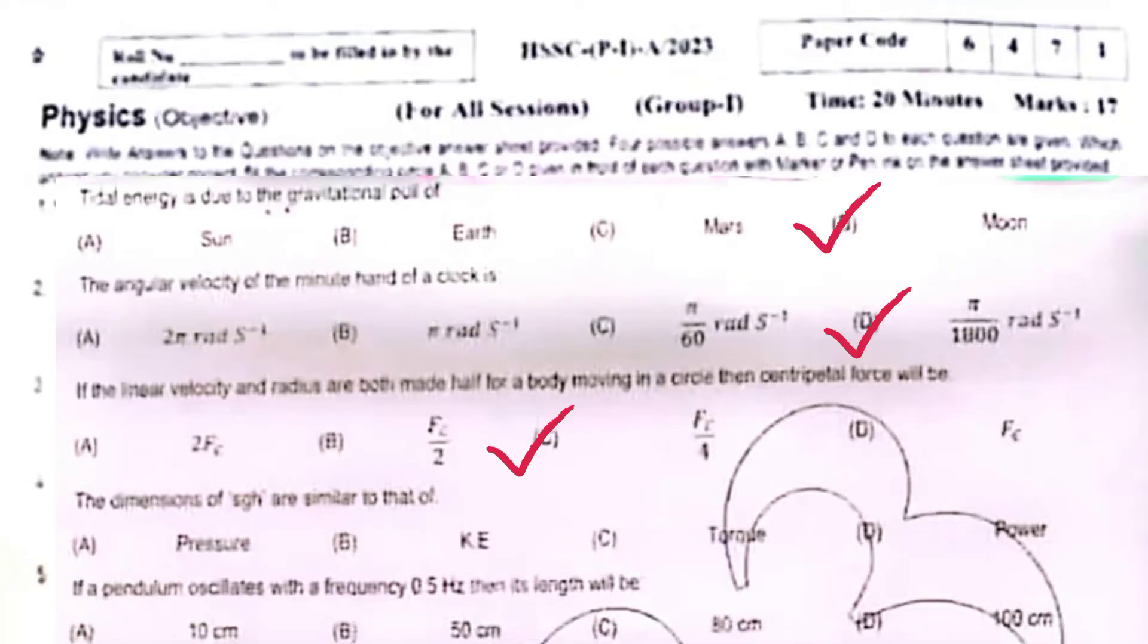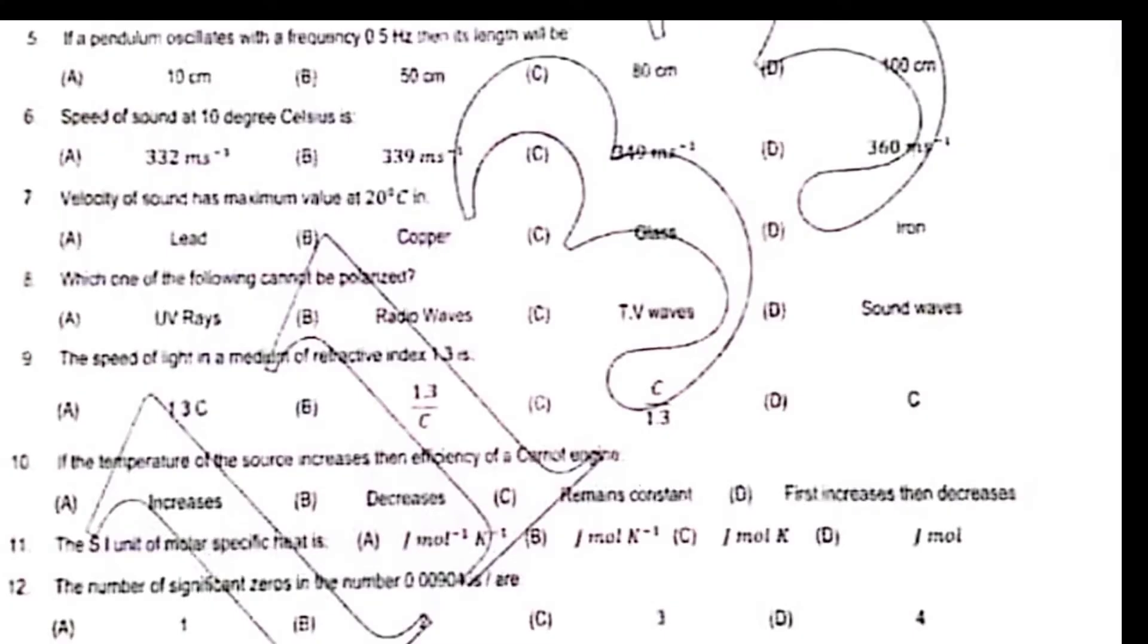The dimensions of sgh are similar to that of pressure. If a pendulum oscillates with a frequency of 0.5 hertz, then its length will be 100 centimeter. Speed of sound at 10 degree Celsius is 339 meter per second.